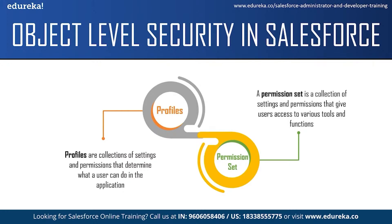For example, suppose several users must delete and transfer leads, but their profile does not allow it. You can create a permission set based on the task so those users can perform the actions of deleting and transferring leads. This way, permission sets add specific capabilities on top of what the profile allows.